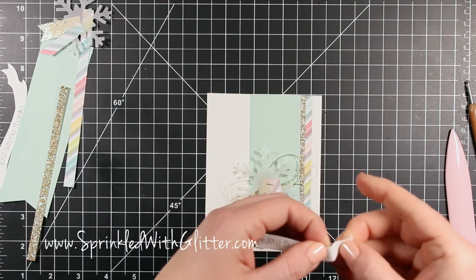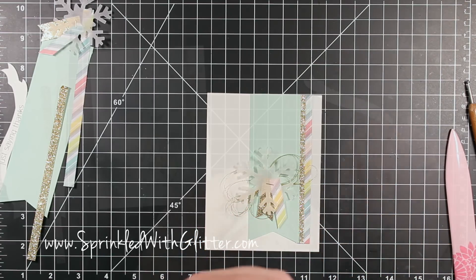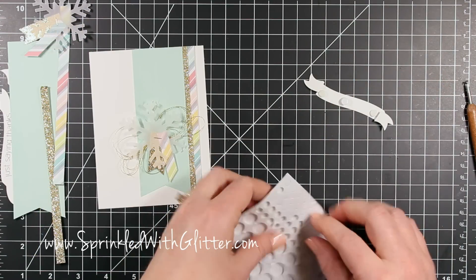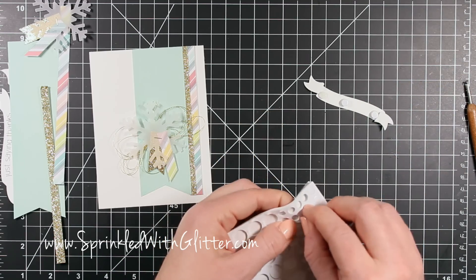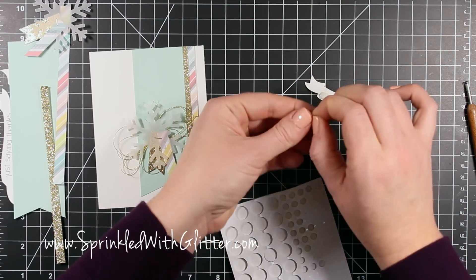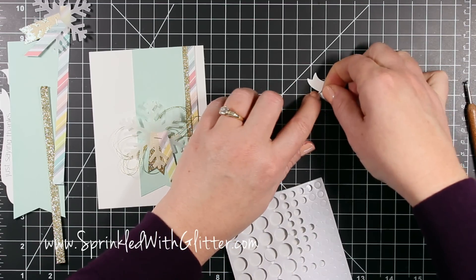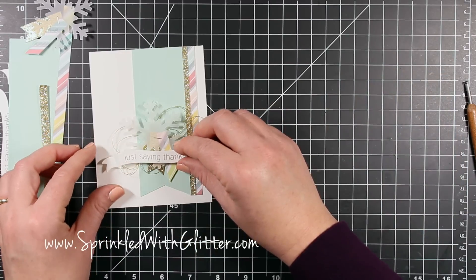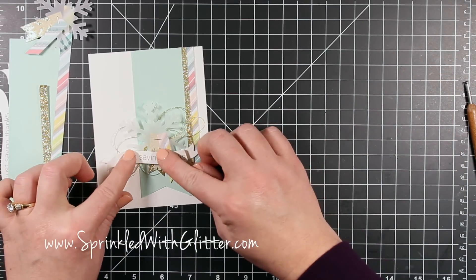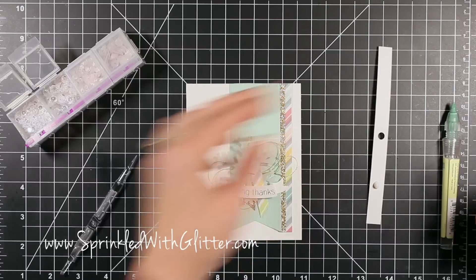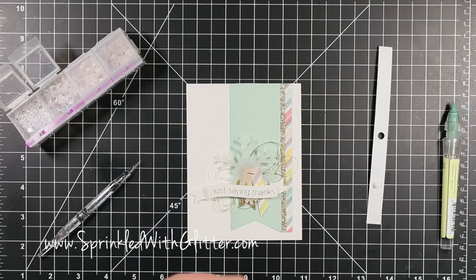This die already has some scored lines in it, so you can just fold along those score lines. Then in the middle of this banner, I'm putting a double layer of foam adhesive. And then on each of those ends that's folded back, I'm just going to put a single layer of foam adhesive and adhere that right over the front or the top of that snowflake cluster there.